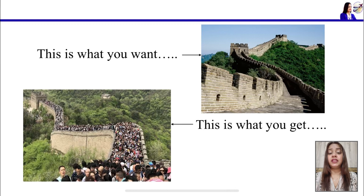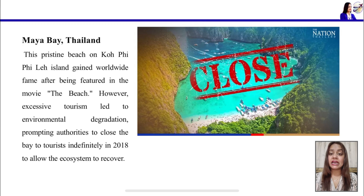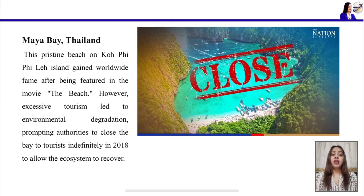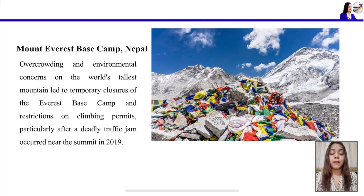We must be responsible while doing tourism. Here are some real-life examples of destinations that have been closed due to over-tourism. The first is Maya Bay in Thailand, located on Koh Phi Phi island, which gained worldwide popularity due to the movie 'The Beach' shot there. After that movie, millions of tourists were attracted, which not only degraded the environment but also forced authorities to close the destination in order to recover its ecosystem.